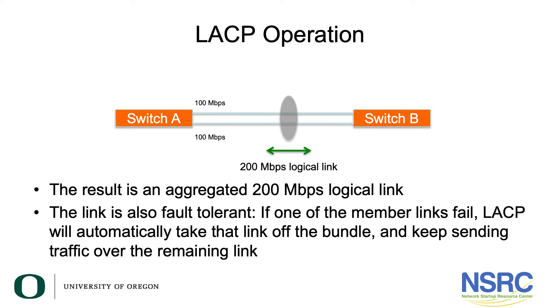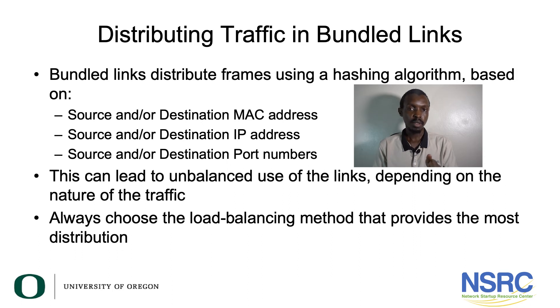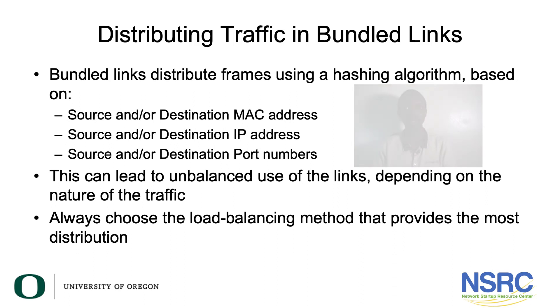It's not limited to two links — you can have three, four, five, with the maximum usually around eight. Traffic across the bundled links is distributed using a hashing algorithm on the frames, based on criteria like source and destination MAC address, source and destination IP address, and source and destination port numbers. Your choice of which fields go into the hashing algorithm can create an imbalanced use of links, so you should always choose a load balancing method that provides the most distribution based on understanding the kind of traffic going between the two switches.